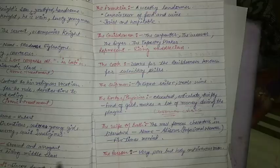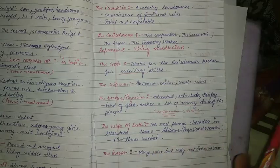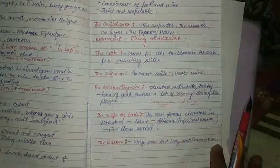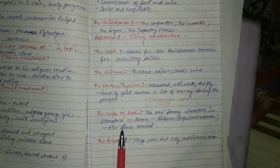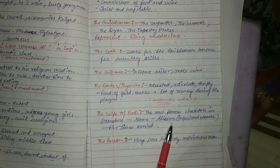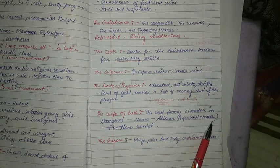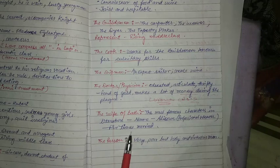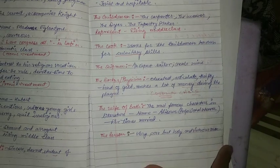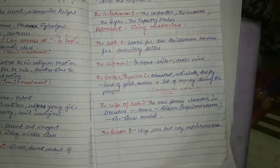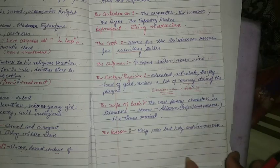The Wife of Bath is one of the most famous characters in all of literature. Her name is Alison and she is a professional weaver who has been married five times. The Parson is a very poor but holy and virtuous man.